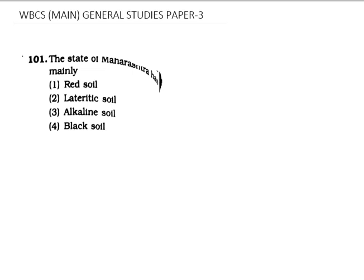Hello, today we are going to answer one question from WBCS Men's General Studies Paper 3. The question is: the state of Maharashtra has mainly red soil, lateritic soil, alkaline soil, or black soil? Among these four options we need to find the correct one, but here we not only give you the right answer but also try to give a small description about the background of this answer.